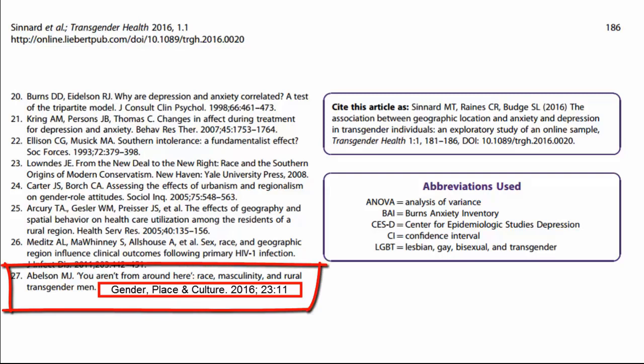This one is by Abelson. It's titled 'You Aren't From Around Here: Race, Masculinity, and Rural Transgender Men.' This article was published in the journal Gender, Place, and Culture in 2016, and I can see from the citation that it was published in Volume 23, Issue 11.